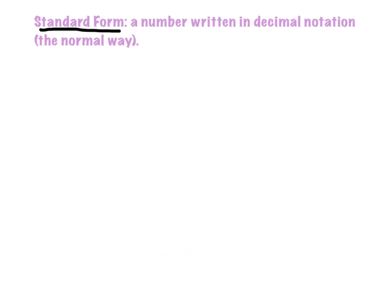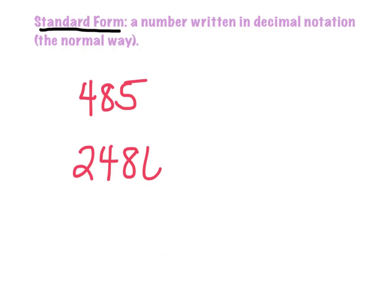So a couple of quick definitions that we're going to be working with today. The first one is called standard form. Standard form is a number written in decimal notation — all that means is a number written the normal way. So if I gave you 485, that number is written in standard form. If I gave you 2,486, that's standard form. 5.6 — standard form. Just a normal number written the normal way is called standard form.